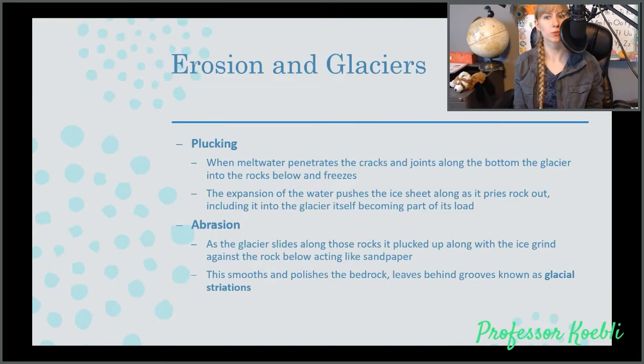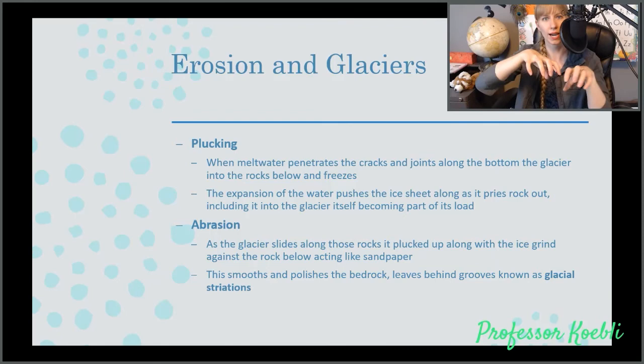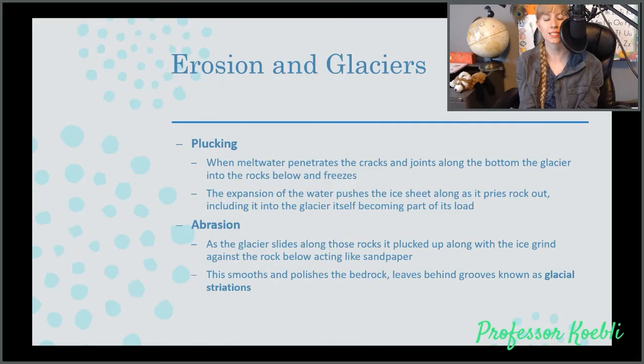Glaciers do flow. They're very slow, unlike a river. They flow only a few centimeters per year. They do cause erosion. One of these types of erosion is plucking, which is when meltwater penetrates, cracks and joins along the bottom of the glacier into rocks below, freezes. The expansion of the water pushes the ice sheet along as it pries the rock out, joining it into the glacier, becoming part of its glacial load. Abrasion happens as the glacier slides along and those rocks it's plucked out along with the ice at the bottom grind against the rock below, acting like sandpaper. This smooths and polishes bedrock and leaves behind grooves known as glacial striation.